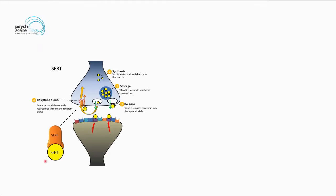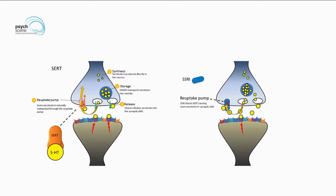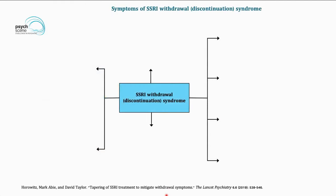Looking at the diagram: on the left-hand side you can see SERT, which is the reuptake pump, and on the right-hand side the SSRI blocks that reuptake pump, so there is lots of serotonin available in the synaptic cleft. When the SSRI is taken away, there will be a deficiency in the synaptic cleft; the down-regulated receptors suddenly up-regulate, become super-sensitive, and start craving.